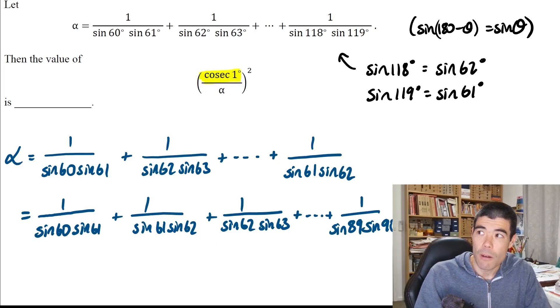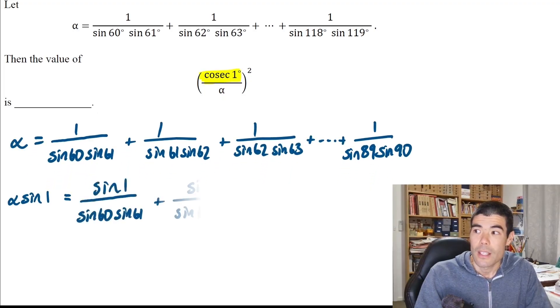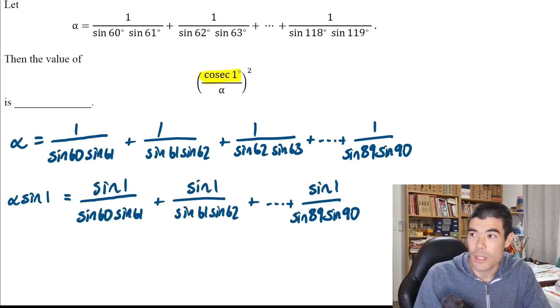Now, if this is alpha, we're interested in cosec 1 divided by alpha. Cosec is 1 over sine, so we're interested in alpha times sine of 1. We can write sine of 1 on the top of all the fractions in our sequence. I wonder if you can see what we could do from there.